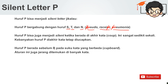Huruf P bisa juga menjadi silent ketika berada di akhir kata. Ini sangat sedikit sekali — kebanyakan huruf P di akhir tetap saja diucapkan. Mungkin kata tersebut merupakan bentuk serapan dari bahasa asing, so we just try to follow the source of the word. Lalu kemudian, huruf P berada sebelum B pada suku kata yang berbeda, contohnya adalah cupboard — kita tidak membaca huruf P-nya. Aturan ini juga jarang ditemukan, jadi kita fokus pada aturan yang pertama: huruf P bergabung dengan huruf S, T, dan N.